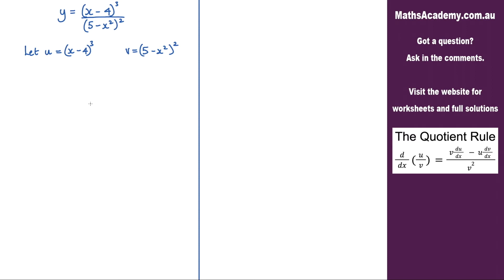Let's go ahead and differentiate these. So du by dx: the way you do these is you differentiate the brackets, which gives us 1, then multiply by the power to get a 3, then write out the bracket and reduce the power by 1.